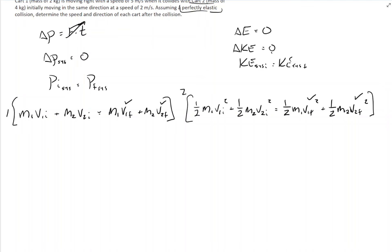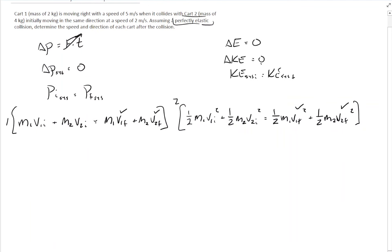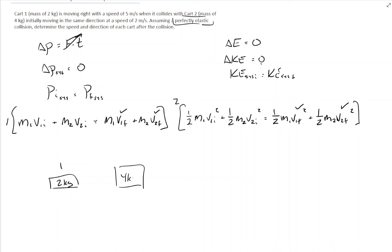It always helps to have a good visual so we know what kind of answers we're expecting. Let's draw a picture — probably something I should have done before breaking down these equations. Cart one has a mass of two kilograms, cart two has a mass of four kilograms. I'll draw each cart, making cart two a little bigger since it's more massive. Cart one is moving at five meters per second — a nice long arrow — and cart two is traveling in the same direction at two meters per second, a smaller arrow.